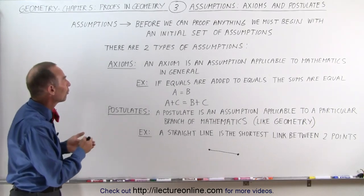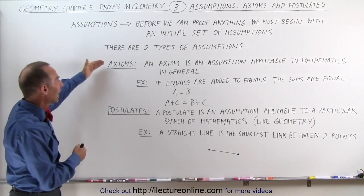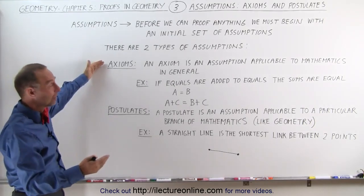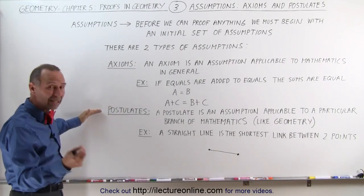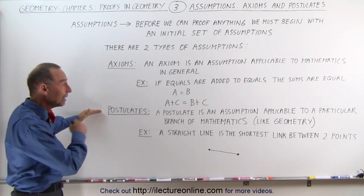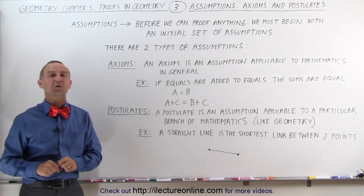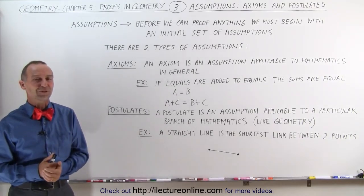These are examples of what we call assumptions. Axioms are for mathematics in general, postulates are for a particular branch of mathematics, and in this case, specifically geometry. And that's how it works.